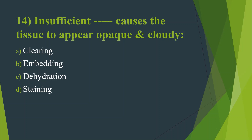Fourteenth question: Insufficient what causes the tissue to appear opaque and cloudy? Option A: Clearing. Option B: Embedding. Option C: Dehydration. Option D: Staining. Here the answer is Option A — Clearing. Clearing is an important step in preparation of histological sections, aiming to remove alcohol and other dehydrants from the tissue. The routine clearing agent used is xylene. The tissue processing steps are: fixation, dehydration, clearing, impregnation, embedding and blocking, section cutting, and routine staining.